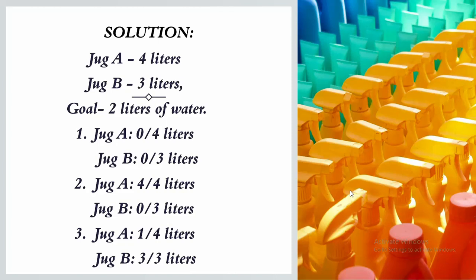Initially both jugs are empty. In this case jug A: 0/4 liters and jug B: 0/3 liters. Both jugs are empty. In the next step we can perform a series of allowed operations to measure two liters of water. Here is one possible solution.